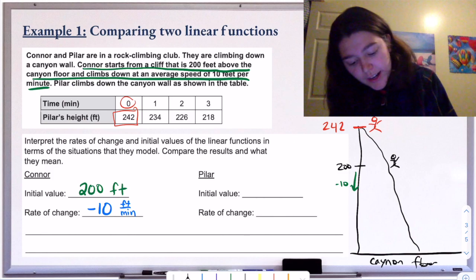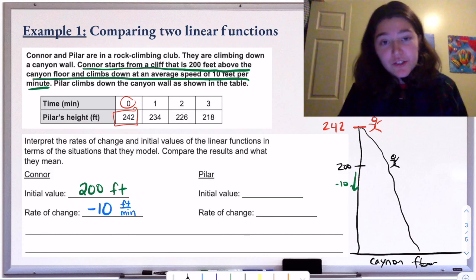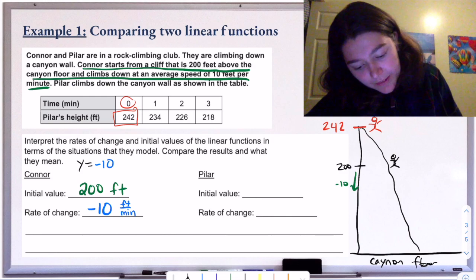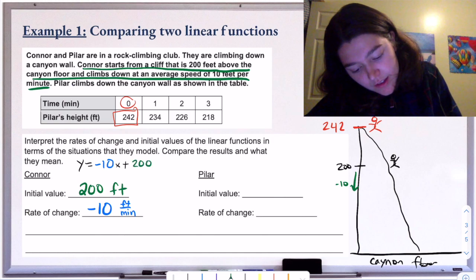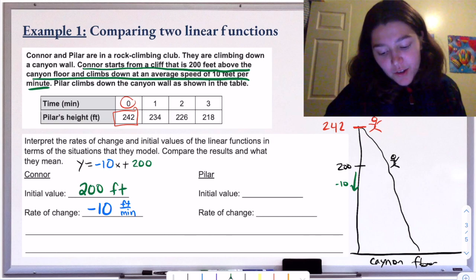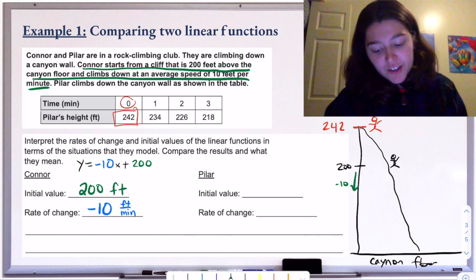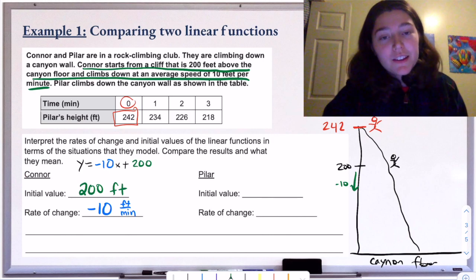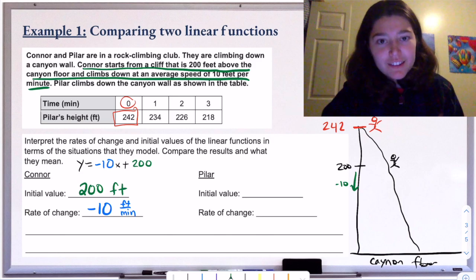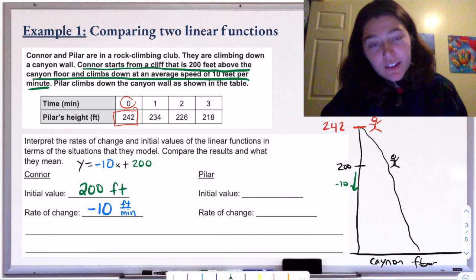While the problem doesn't ask for it, we could write an equation for this in slope-intercept form. The rate of change is the slope, m, which is negative 10. And b is 200 — that's the initial value or y-intercept. So the equation y equals negative 10x plus 200 models Connor's function. This equation is really useful because we can substitute in different minute values for x and figure out where Connor will be.